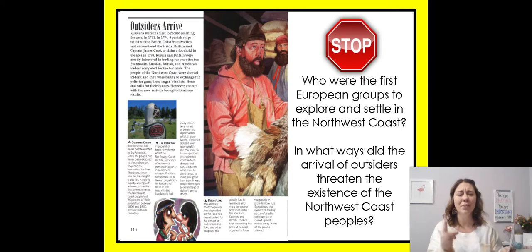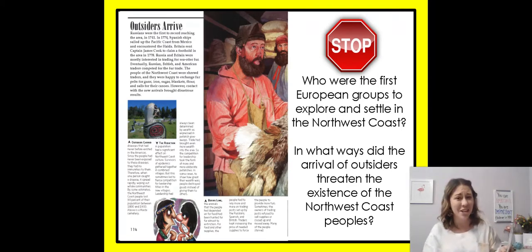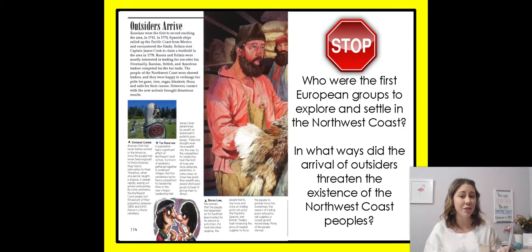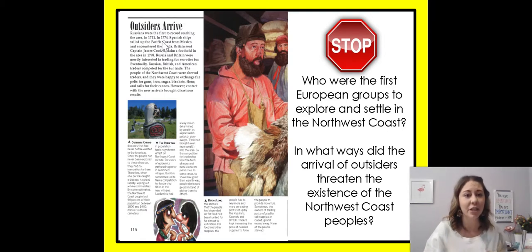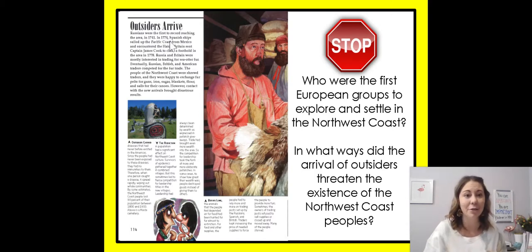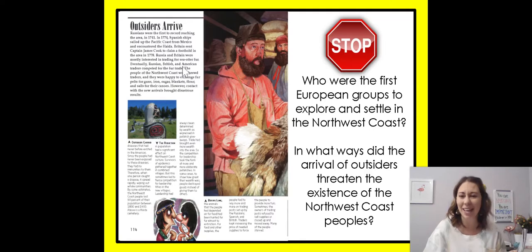Right there I've already answered the first question — who were the first European groups to explore and settle in the Northwest Coast? It starts by saying Russians were the first to record reaching the area, so that's number one. Then it goes to the Spanish, then Britain came along as well, and eventually Americans came too, though Americans weren't necessarily European settlers.